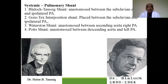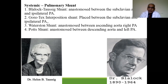The major role is the systemic-pulmonary shunt, of which there are four types: the Blalock-Taussig shunt — anastomosis between the subclavian artery and ipsilateral pulmonary artery; Gore-Tex interposition shunt between subclavian and ipsilateral pulmonary artery; Waterston shunt — anastomosis between ascending aorta and right pulmonary artery; and Potts shunt — anastomosis between descending aorta and left pulmonary artery.